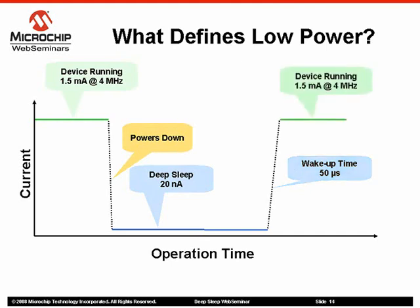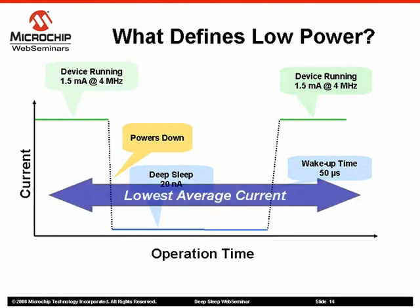Finally, the application resumes active operation, consuming the most power. The progression through each of these states over time defines the average power consumption of the device. While running, the average current drawn would be the full run current of 1.5 milliamps. By maximizing time in deep sleep mode during periods of inactivity, the application can dramatically lower average current consumption.